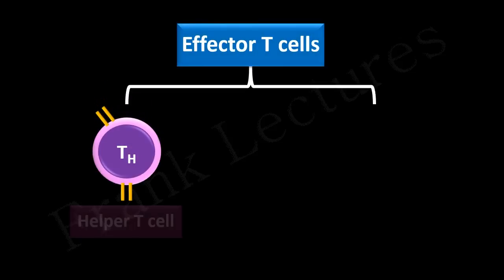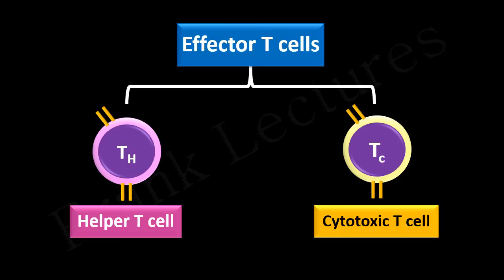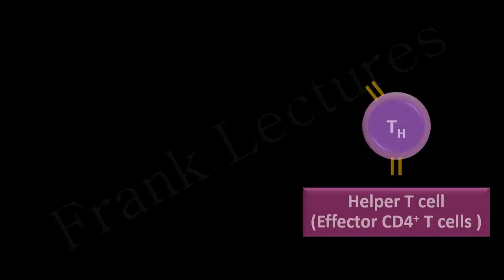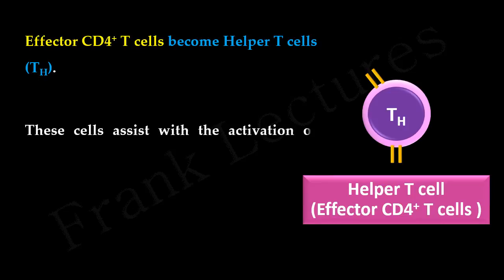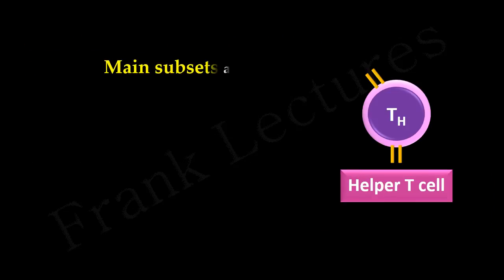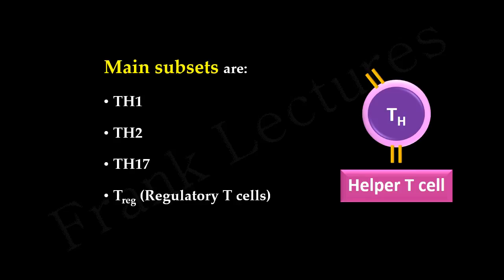There are two main types of effector T-cells: helper T-cells and cytotoxic T-cells. Effector CD4 positive T-cells become helper T-cells. The term helper reflects that these cells assist with the activation of other cells in the immune response. Helper T-cells have several subsets. The main subsets are: T-helper 1 cells, T-helper 2 cells, T-helper 17 cells, and regulatory T-cells. We will study the details of these subsets in a separate video lecture.